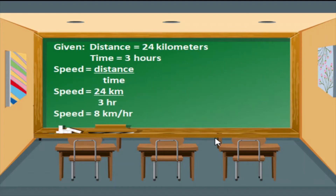Given the distance of 24 kilometers and the time of 3 hours, let us calculate the speed. Speed is equal to distance over time. So, let us substitute: speed is equal to 24 kilometers over 3 hours. Let us divide 24 by 3. Speed is equal to 8 kilometers per hour.